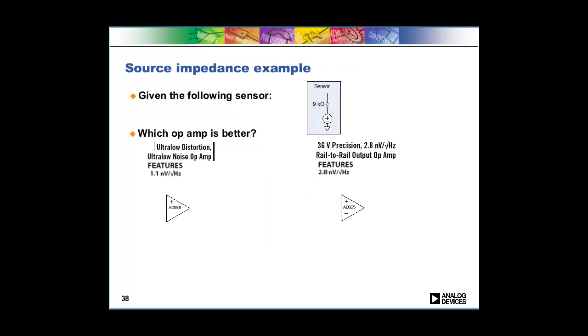We've got an example on this next slide here. Let's say you've been given a sensor and you find out that it's got nine kilohms of impedance in that sensor and your boss told you we need as low a noise system as we can get here. So you go do your due diligence and you look on the ADI website and you go through our amplifiers and you find these two amplifiers here. They're both really low noise amplifiers, the AD8699 and the AD8675.